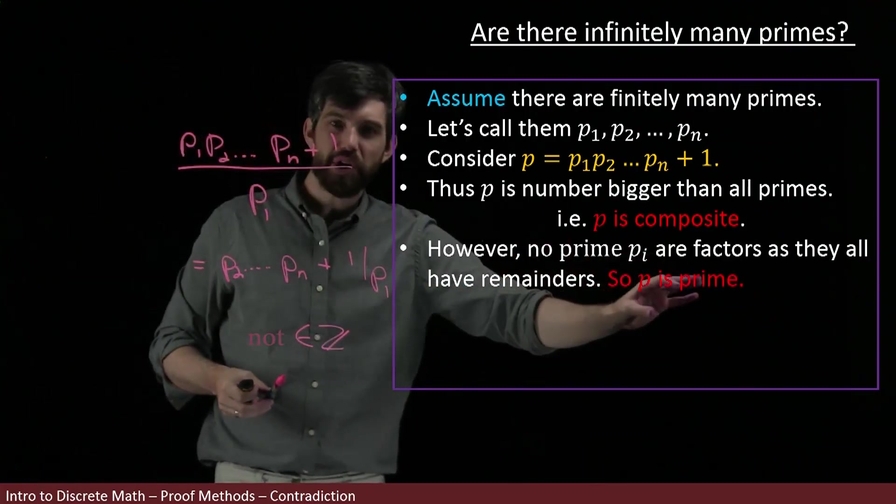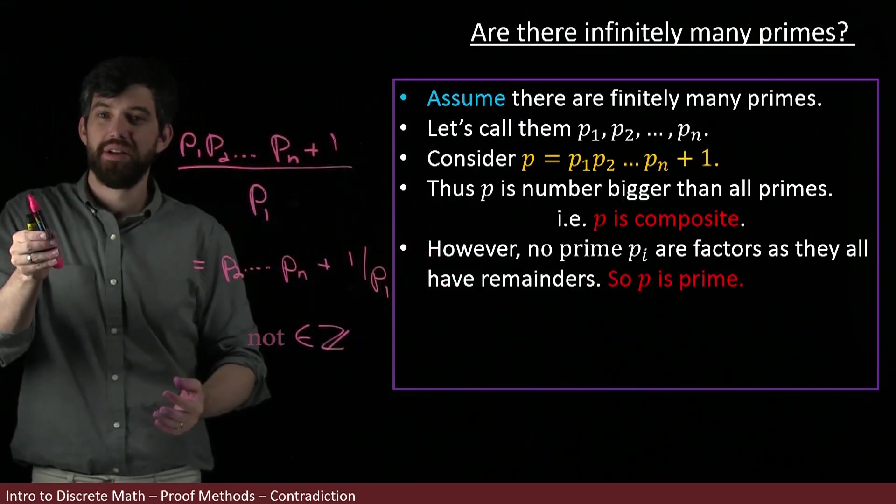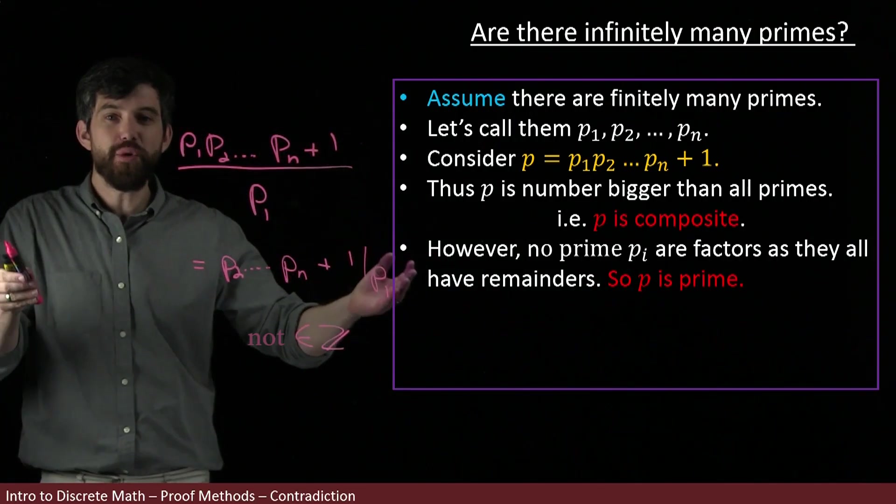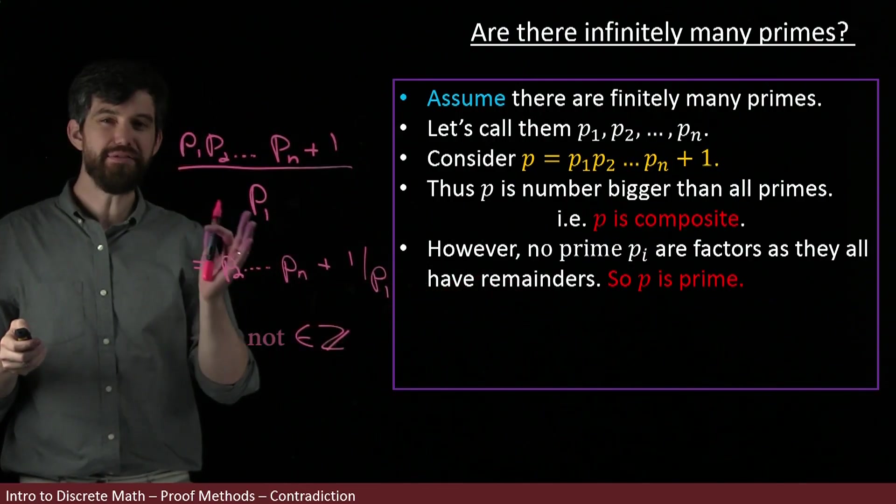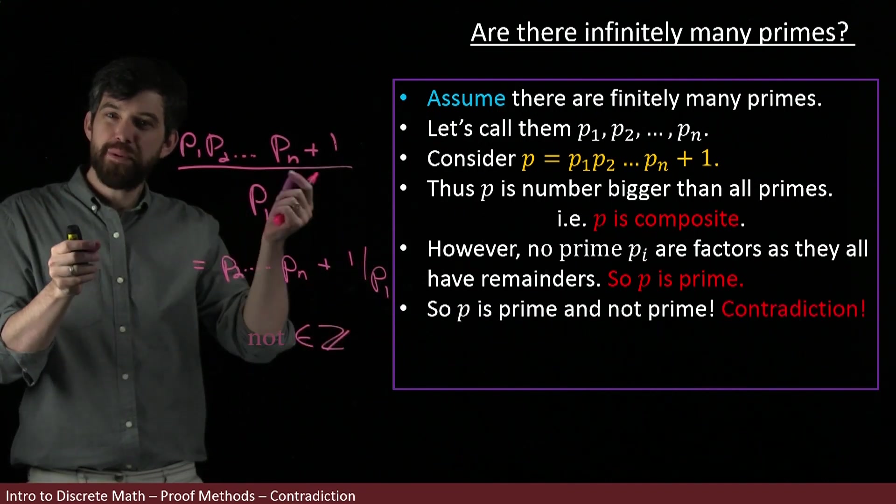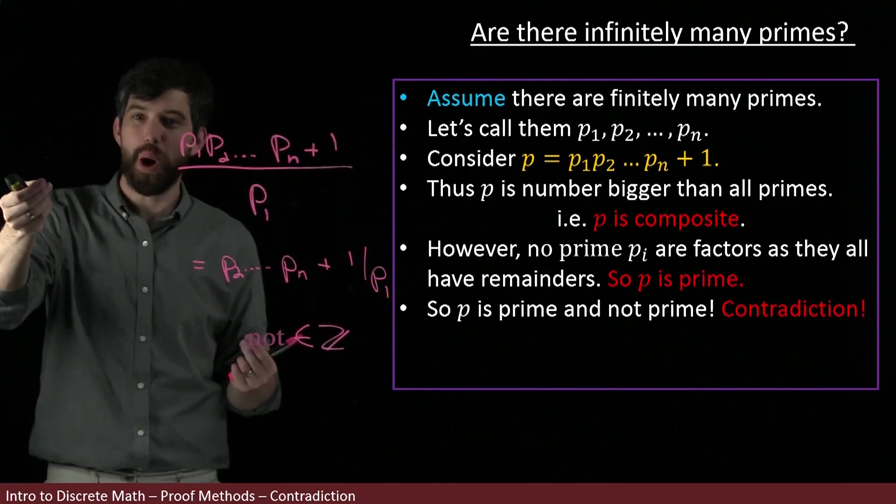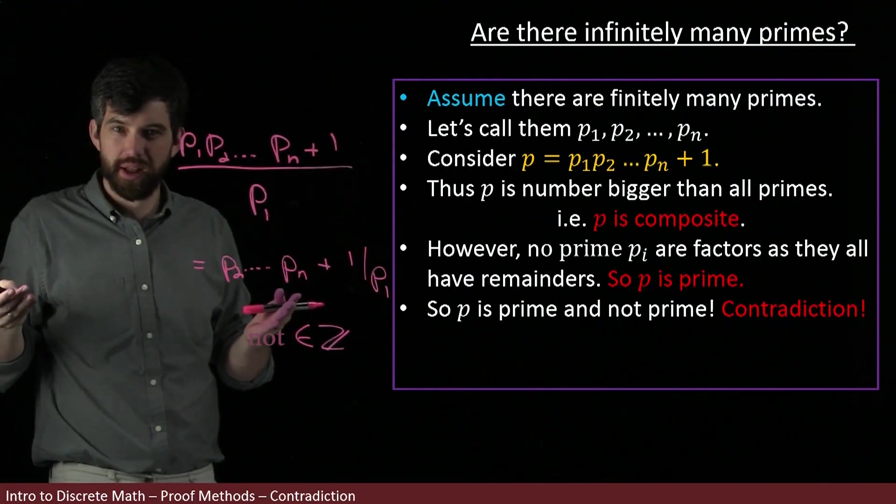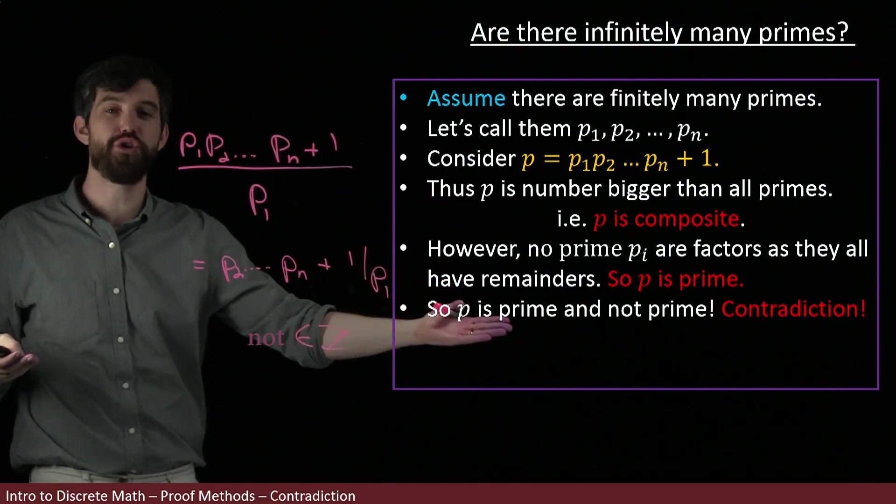But if none of the primes are a factor, that means the only factors are 1 and itself. In other words, the p that I have is prime. But hold on—I've just told you that my p was prime and my p was not prime. That's a contradiction. I can't have something being both prime and not prime. It's impossible.